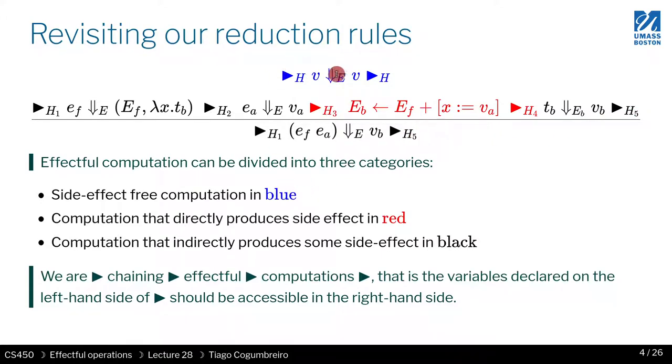So in here I highlighted two kinds of patterns. Blue ones mean that nothing changed in the heap, so the input heap is the same as the output heap, whereas in red you have some form of explicit mutation on the heap.